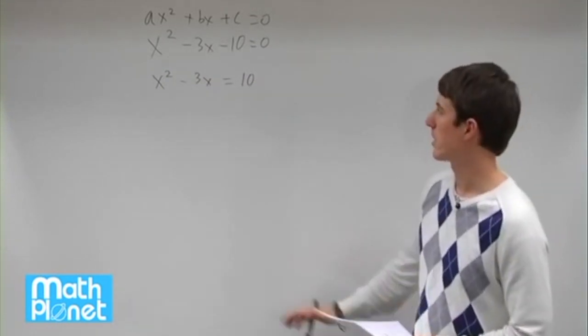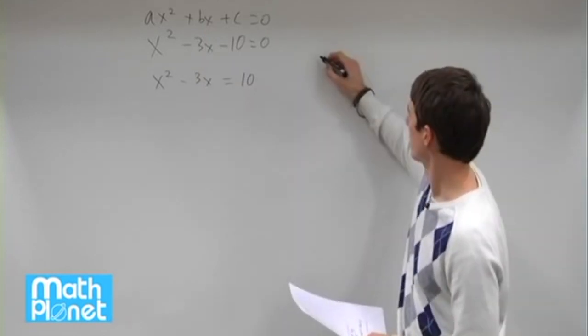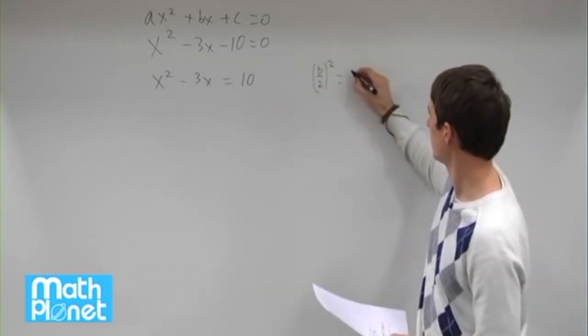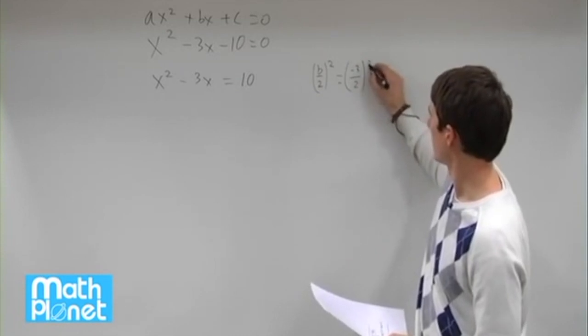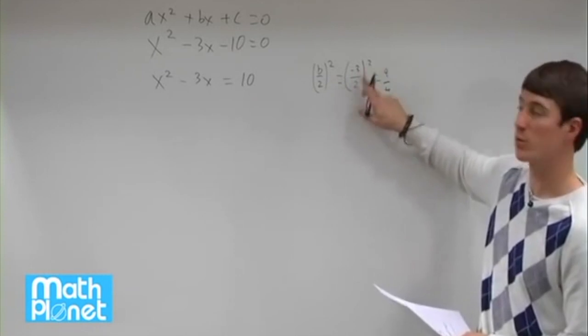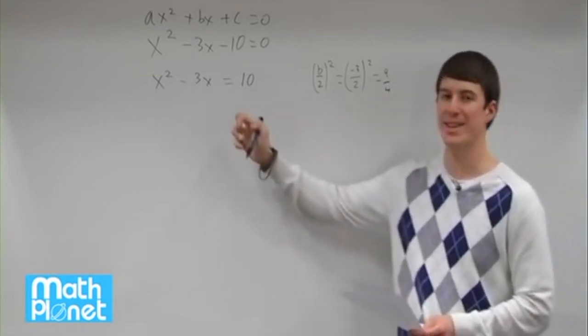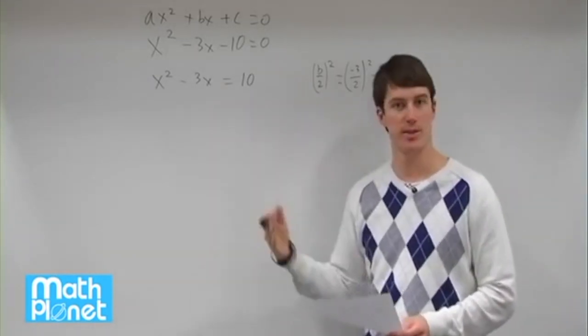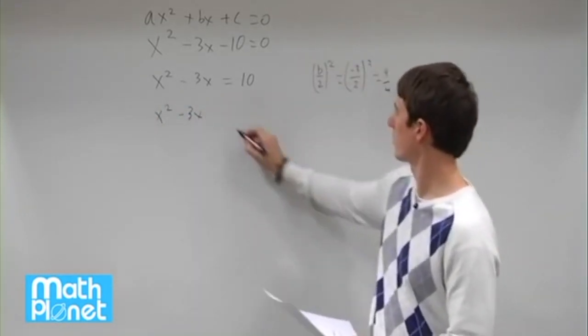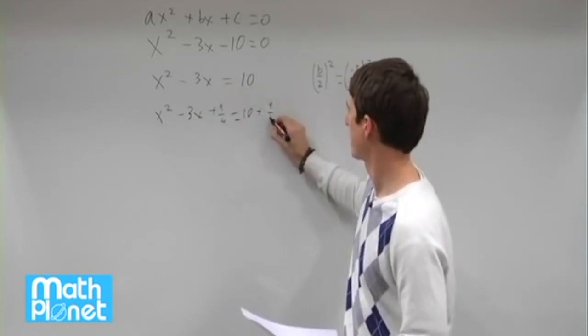Now the second thing we want to do is take this term b, the b term, divide by 2 and square it. So we're going to find b over 2 squared. So b is negative 3, and we square that, so that gives us 9 over 4. Negative 3 squared is 9, 2 squared is 4. We take this term. The third step is we take this term and we add that to both sides. Remember you have to do the same thing to both sides, it's still an equation. So x² - 3x + 9/4 equals 10 + 9/4.